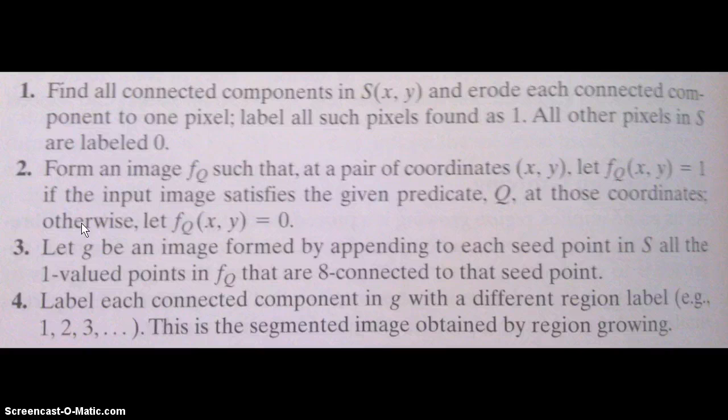Step four labels these regions one, two, three, all the way up to N. Every image is going to be different. You don't know how many regions you're going to have based on your predicate and your seeds that you choose. Once you grow your regions and cluster them together, you have to determine how many regions you have. It could be one, two, three, all the way up to N regions.